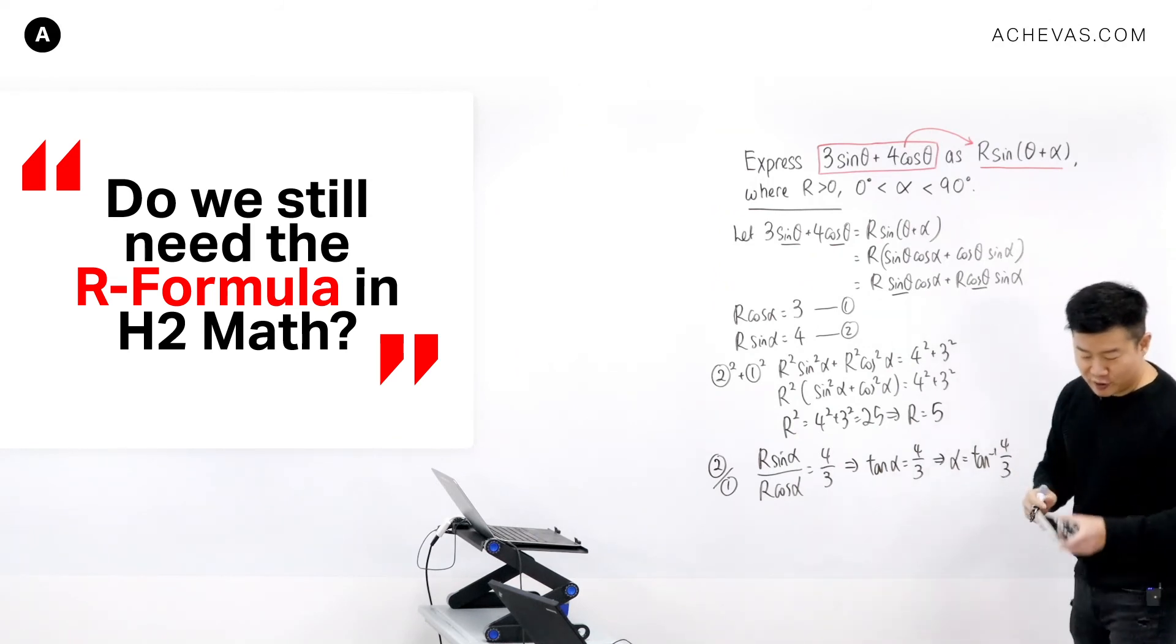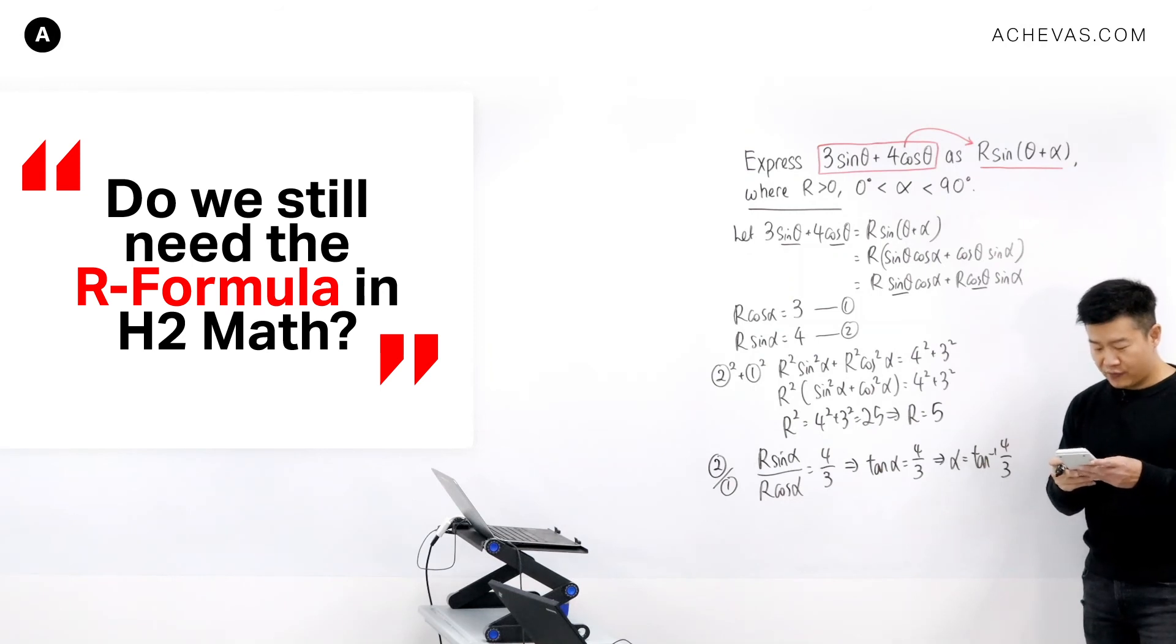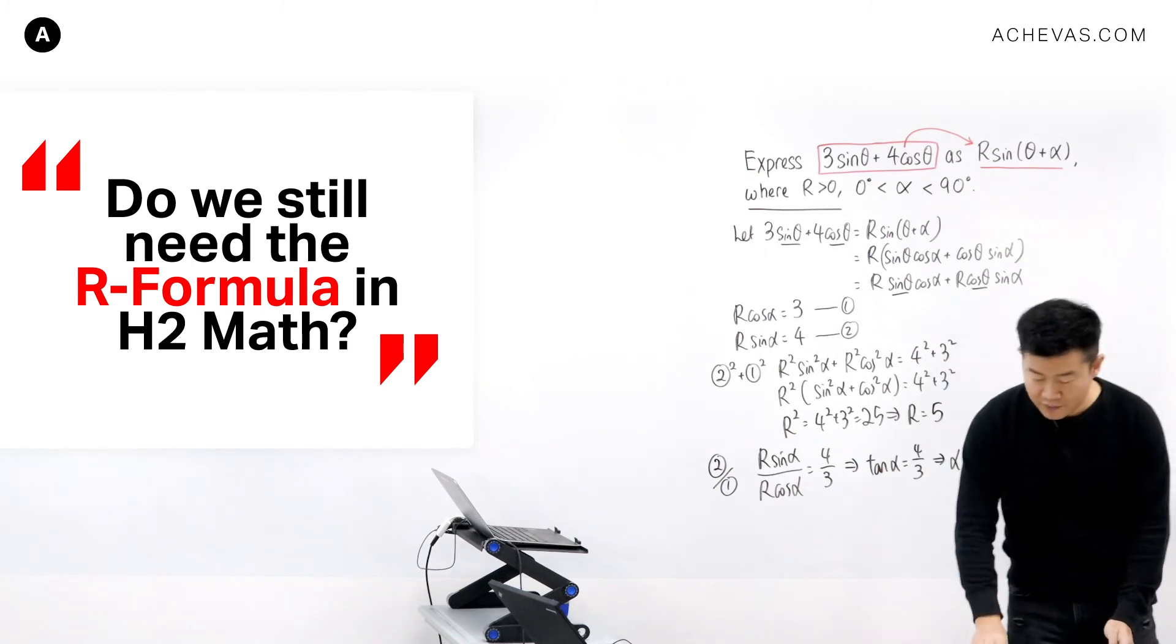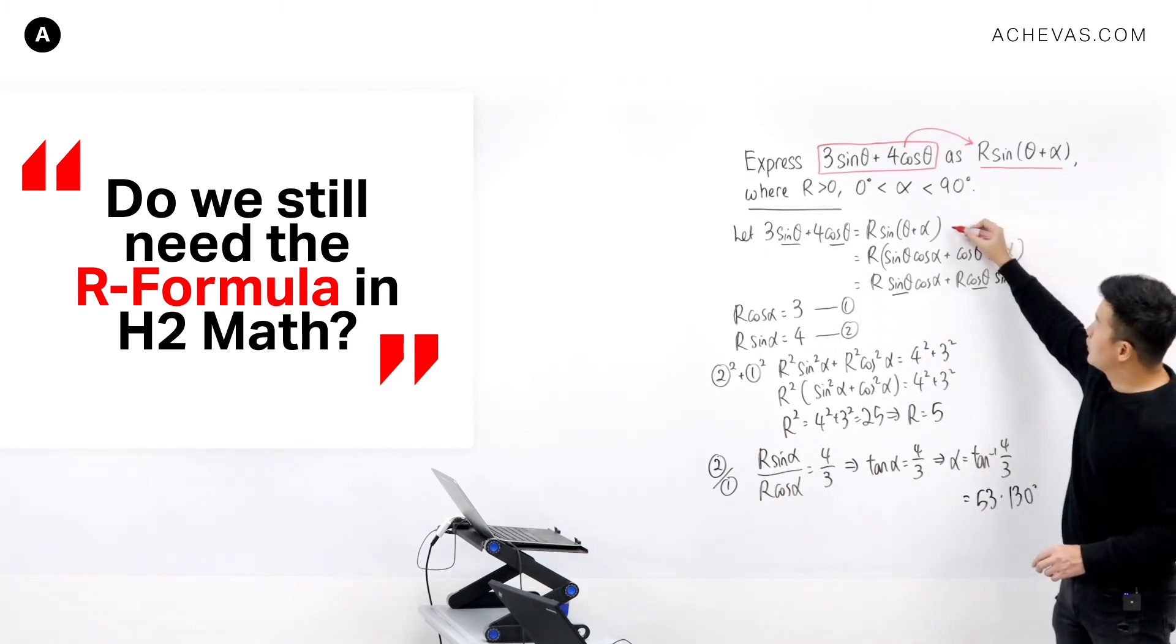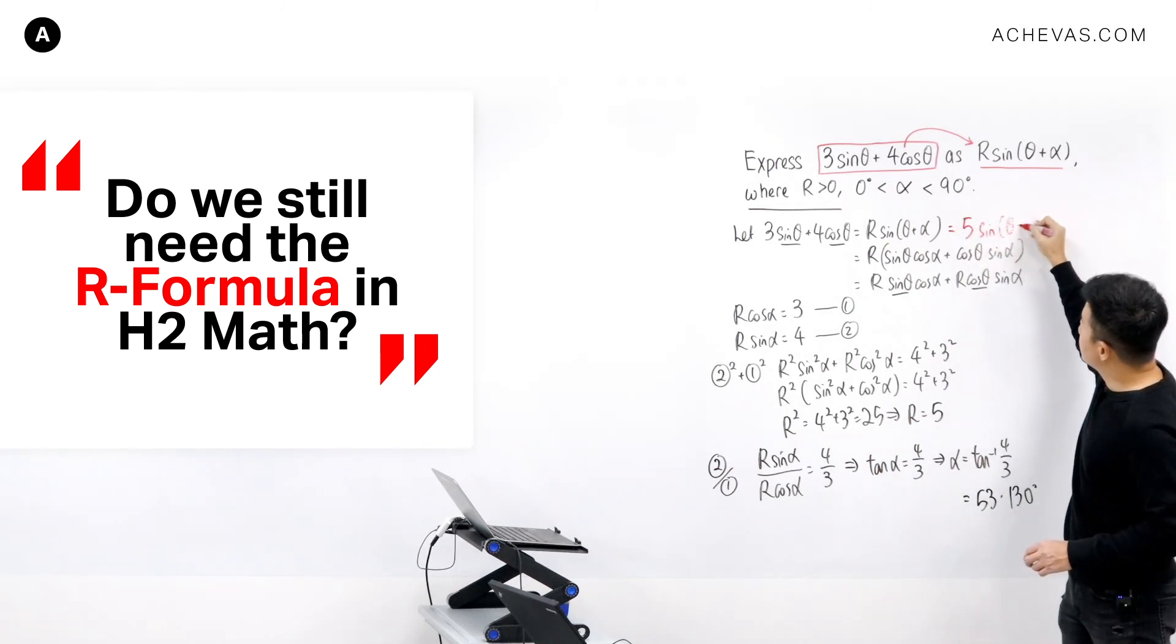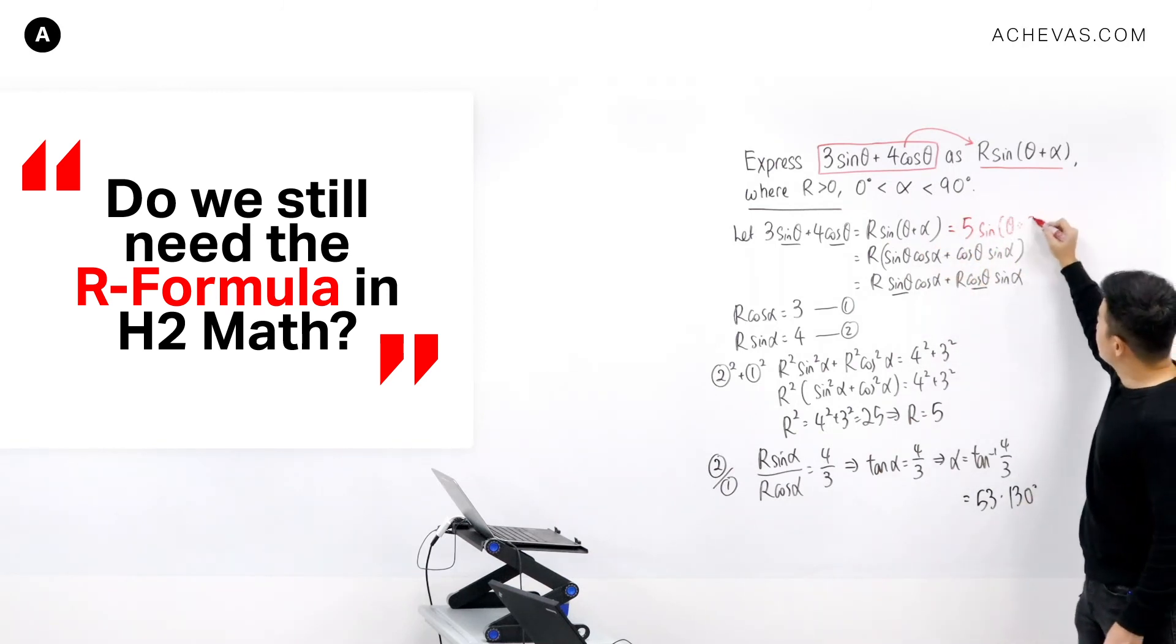And I'm going to press this into my calculator, tangent inverse of 4 over 3. This gives me 53.130 degrees. So now we have gotten our R formula form because R is equal to 5. So 5 sine of theta plus alpha, where alpha is equal to 53.1 degrees.